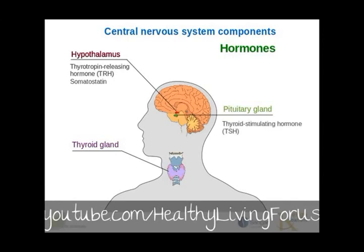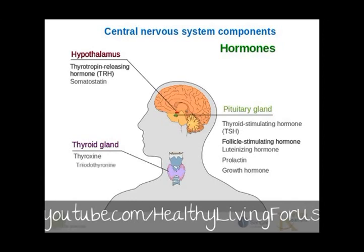The pituitary gland produces thyroid-stimulating hormone, or TSH. It also produces follicle-stimulating hormone, luteinizing hormone, prolactin, and growth hormone — we'll come back to these later. The thyroid gland produces thyroxine, also known as T4, and triiodothyronine, also known as T3.